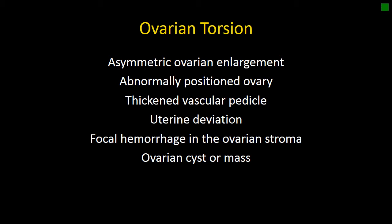Ovarian torsion is thought to need a predisposing adhesion — some sort of inflammation of the fallopian tube related to an infection or prior surgery — that allows the ovary to torse around the tube. When the ovary torses and twists the tube, it is felt to also cause deviation of the uterus away from midline. As ovarian torsion becomes more severe or has been present longer, you may also develop hemorrhage within the ovarian stroma and within follicles or cysts within the ovary.